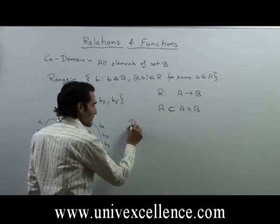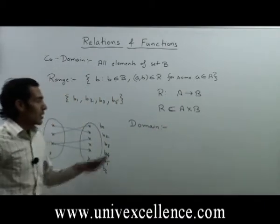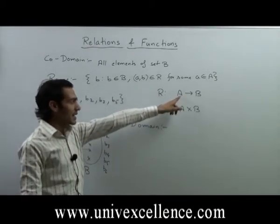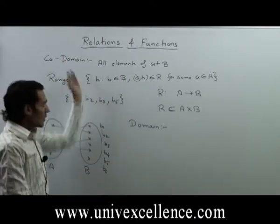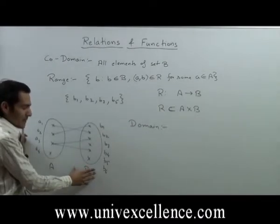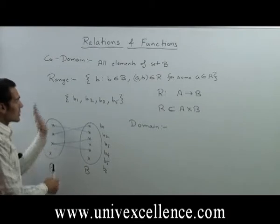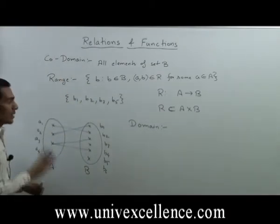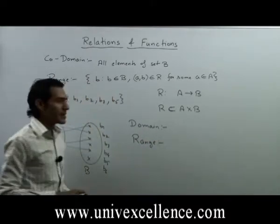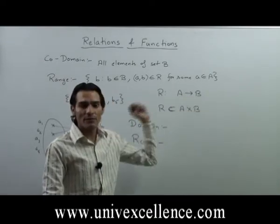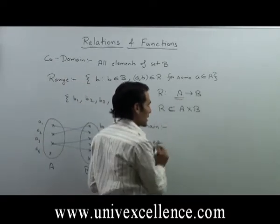So now it is clear we have three terms. First, domain — the relation is from A to B, so domain is the set of elements of set A which are related to set B, so it includes A1, A2, A3. Then we have codomain, which means all elements of set B. Then we have range, which means the elements of set B which are related to set A. So now we can clearly differentiate between these three terms. Later on we will use only two terms: domain and range — domain belongs to set A and range belongs to set B.